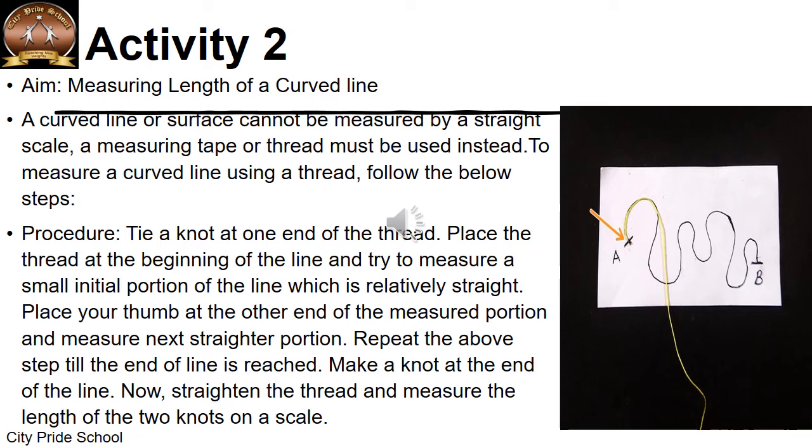Now how do we do it? We first tie a knot at one end of the thread and that knot we place on the starting point. Then we try to move the thread all along the curved path. And at each turning, we may mark, put a mark on the thread so that it goes very smoothly. And then after moving the thread all along the curved line, we again make another knot at the end of the line. Or we can even mark on the thread. So when we straighten the thread, we get the length of the curved line.